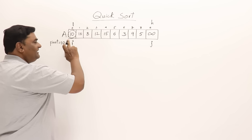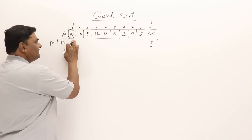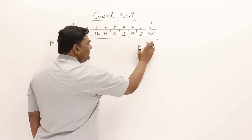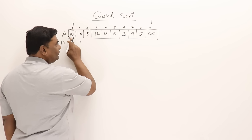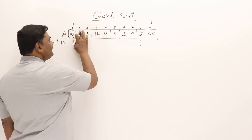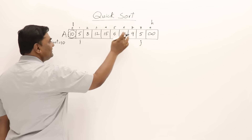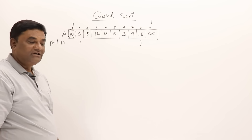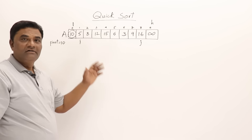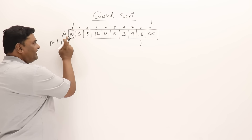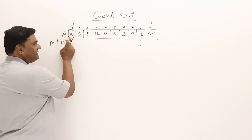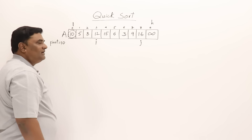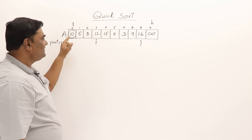Now the partitioning procedure: increment I until you find an element greater than 10 — the next element found is greater than pivot, so I stops. Then decrement J until you find an element smaller than or equal to pivot — J stops at such an element. Exchange them: 5 comes here and 16 goes there. That is one swap. Continue: increment I — 8 is not greater than pivot, but 12 is, so I stops at 12. Decrement J until finding an element smaller than pivot.